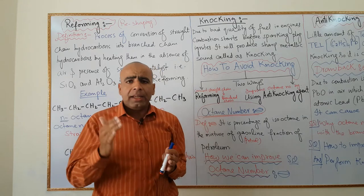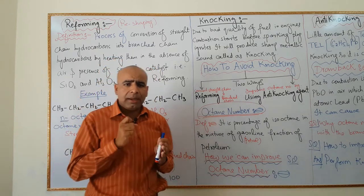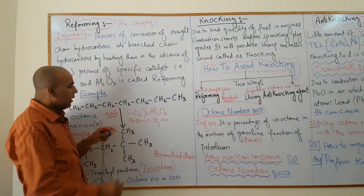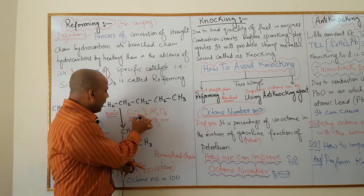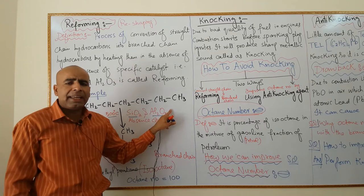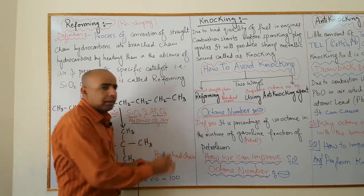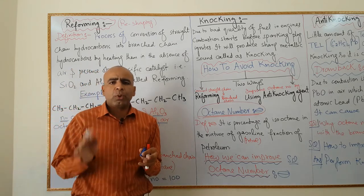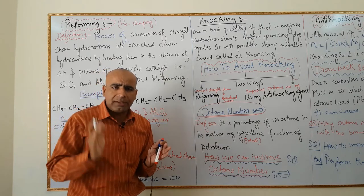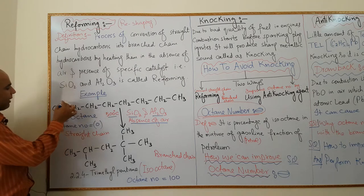The conditions for reforming are: heating at 500 degrees Celsius, in the presence of silica (silicon dioxide) and alumina (aluminium oxide), and in the absence of air. For example, consider n-octane, which has eight carbon atoms — this is a straight chain hydrocarbon.